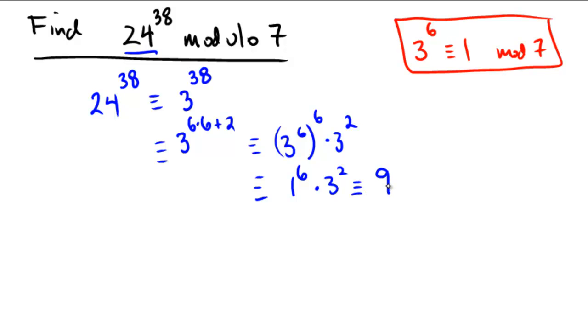So this is congruent to 9. But remember, the whole problem was modulo 7. So what is the remainder when you divide 9 by 7? Well, 7 goes into 9 one time with 2 left over. So overall, the final answer to this problem is that the remainder modulo 7 is going to be 2. So the final answer to the problem is 2.